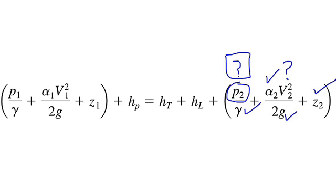Moving over to the left side, the pressure at 1 is known. Specific weight of the gasoline is known. Alpha 1 is known. V1 is unknown. This is known. And the elevation at section 1 is 12 feet.